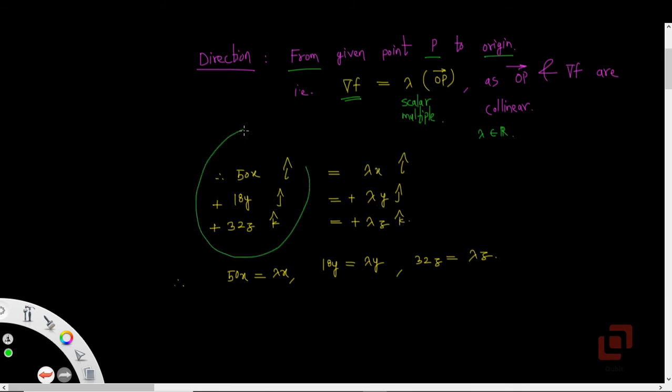Remember that the vector on the left-hand side is the gradient vector which we obtained earlier, and the vector on the right-hand side is nothing but the scalar multiple of the position vector OP.